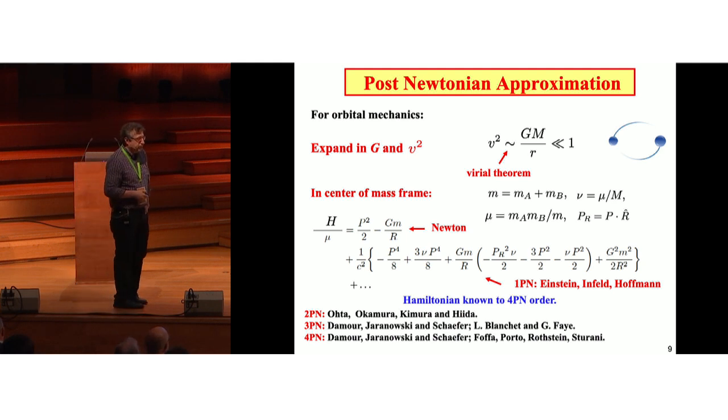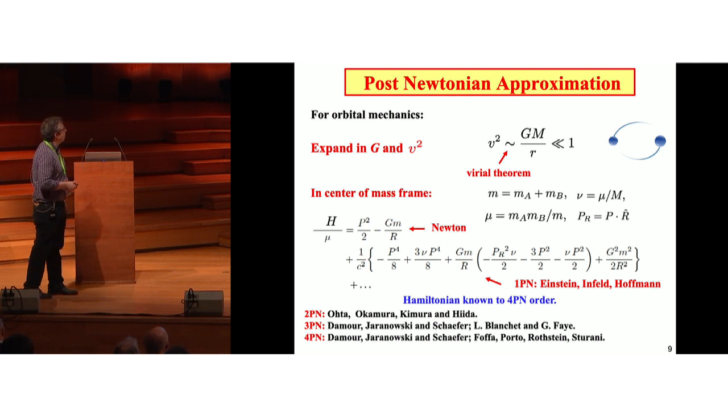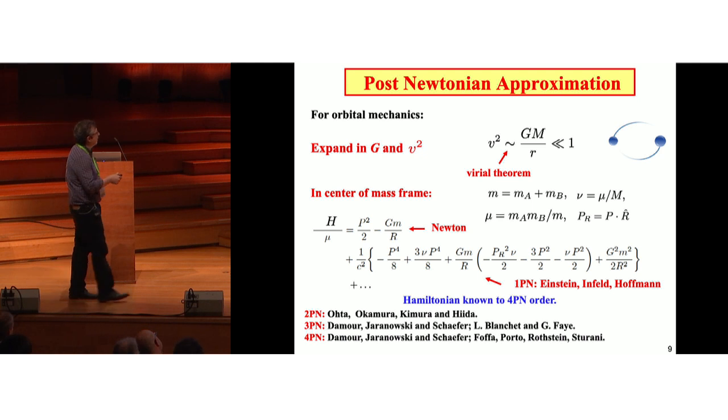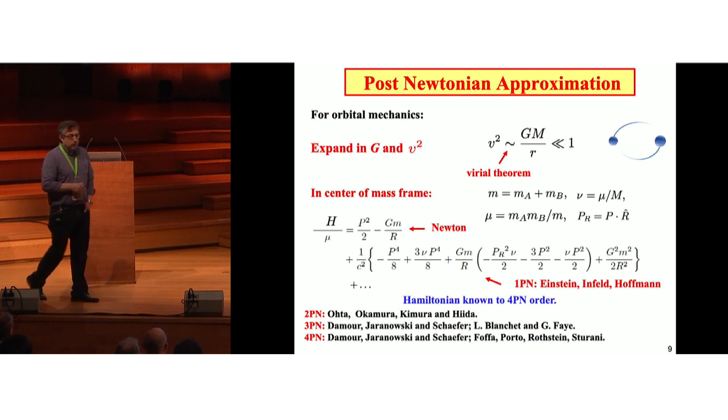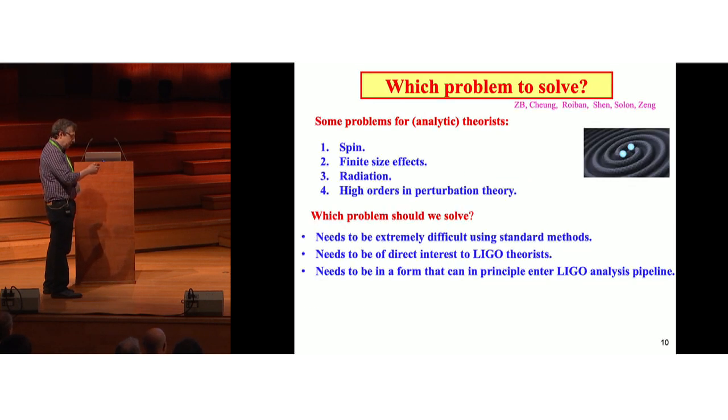Now, the problem we're going to be thinking about is trying to improve the post-Newtonian approximation for a two-body problem. So, of course, Newton started this all. For orbital mechanics, what we have to keep in mind is there's the virial theorem. V squared is like GM over R. They're approximately the same order. So that motivates this double expansion, which is called the post-Newtonian approximation, where you expand both in velocity and in the coupling. Here's the first term. That's Newton's second term, that's Einstein, Infeld, and Hoffman worked that out. This post-Newtonian Hamiltonian, it's known to 4PN, that means fourth post-Newtonian order. Over the years, it's been calculated, more and more complicated calculations. This one's from 2014. The reason why people do these calculations is because they're important, because of the gravitational wave detectors, LIGO, and many other detectors that are going to be coming.